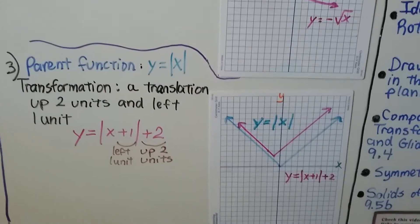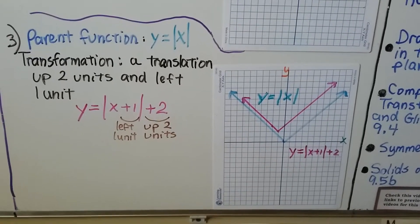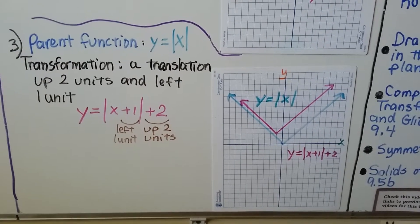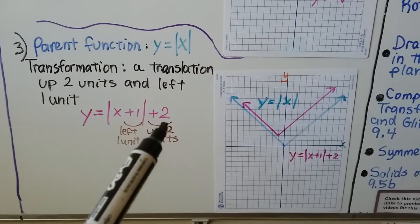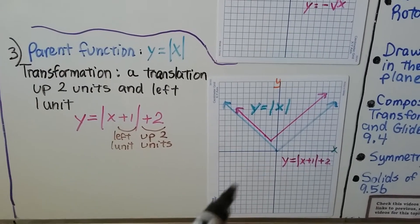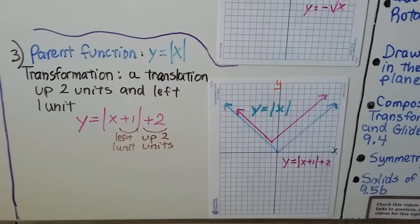That parent function, y equals the absolute value of x, that would be the blue one. Our transformation, a translation up two units, so we've got a plus two, and left one unit, so we have a plus one. That would be the pink one.